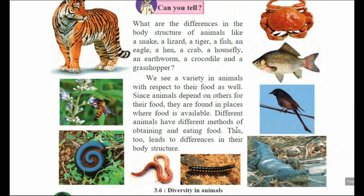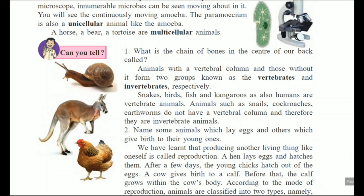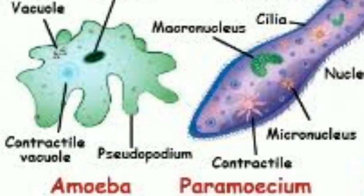This is also a criteria to classify different animals. Now if you observe species like amoeba and paramecium under the microscope, these are examples of unicellular organisms. 'Uni' means only one cell — there is only one cell in their body which controls all functions, therefore they are called unicellular organisms.